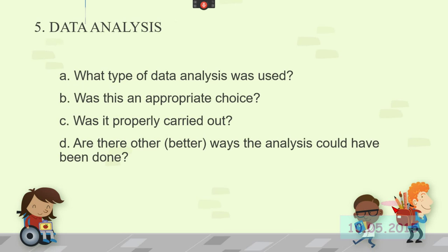Data analysis. What type of data analysis was used? Typically if you're doing quantitative reviews, you will see them mentioning the name of the statistical test. On the qualitative side, sometimes they will talk about taking a specific approach based on a particular school of thought of qualitative study, like a grounded theory approach or meta narrative or something like that. Was this choice appropriate? Was it properly carried out? Are there other better ways the analysis could have been done?